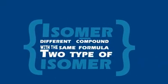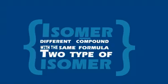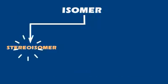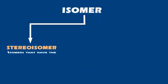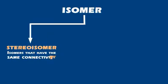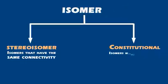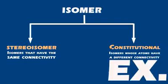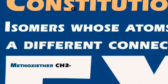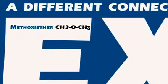Isomers are compounds with the same molecular formula but different physical and chemical properties. There are two types: structural isomers, which have the same connectivity but differ in the arrangement of atoms in space; and constitutional isomers, whose atoms have different connectivity. For example, methoxyether and ethanol.